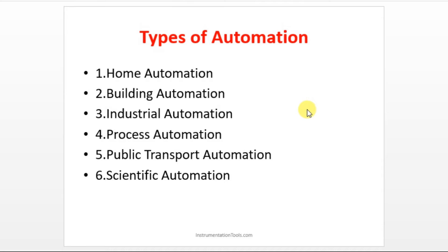The devices we use in the home come under home automation. The second type is building automation — like elevators and lifts in buildings. Then we have industrial automation, process automation, and public transport automation — for example, traffic light control. The last type is scientific automation, where automated kits are used for all research and development.